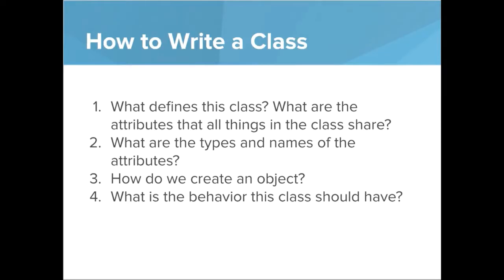First, you have to figure out what defines this class — what are the attributes that all things in the class share. Then you have to figure out what are the types and names of those attributes. Three, you want to figure out how do we create an object of that class. And four, you want to figure out what is the behavior that this class should have.